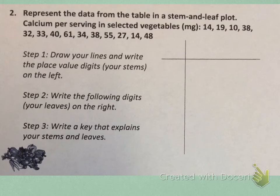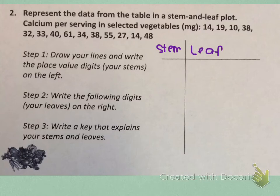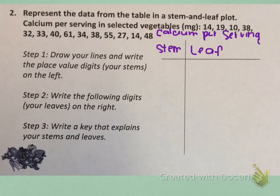So let's try this one. Represent the data from the table in a stem and leaf plot. This is calcium per serving in selected vegetables, and it's measured in milligrams — we're just given a list. So we're going to go ahead and write a stem and leaf plot, label our data plot, and we're going to label it calcium per serving, and then in parentheses we'll put milligrams.